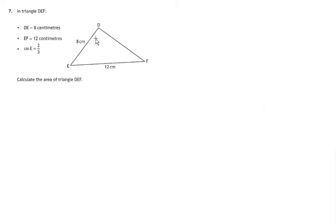In this question, we're given a triangle DEF with various pieces of information about it. Two of the sides are given: DE is 8 centimeters long, EF is 12 centimeters long. We're not told angle E, we're told the sine of angle E, which basically gives you the clue as to how to do this question.